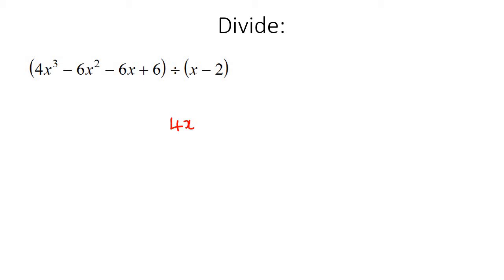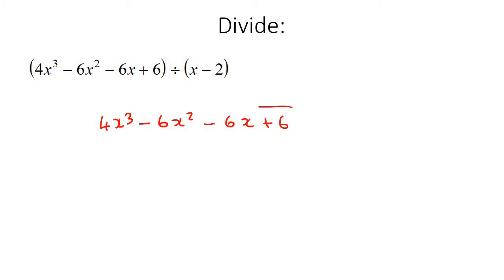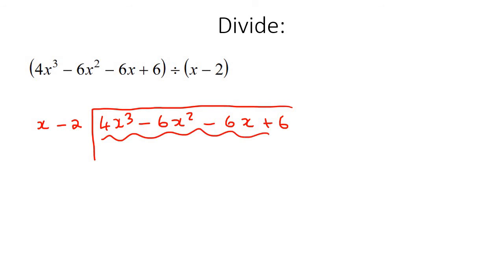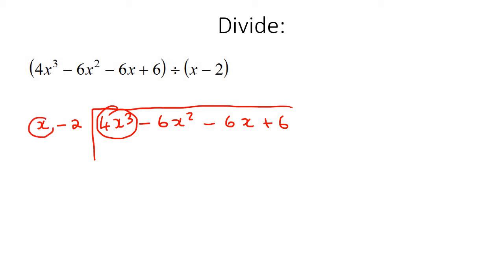So we're going to write this out: 4x to the power of 3, take away 6x squared, take away 6x plus 6, and then we're going to divide that by x take away 2. As we saw in the previous lesson, we're going to take the highest power over here and the highest power over here. The highest power here would be 4x to the power of 3, and the highest power here would be x. Dividing those gives us 4x to the power of 2.